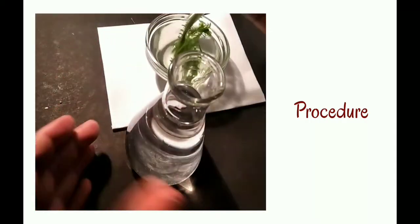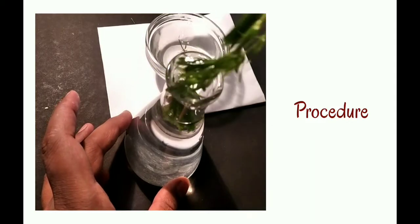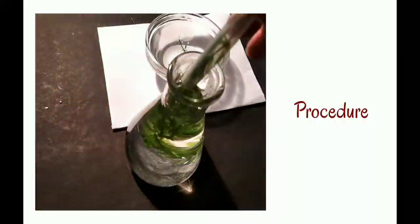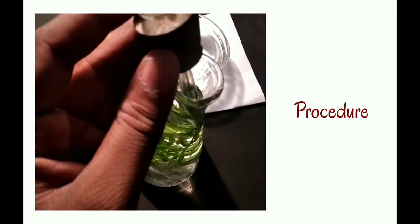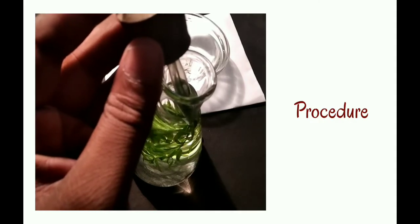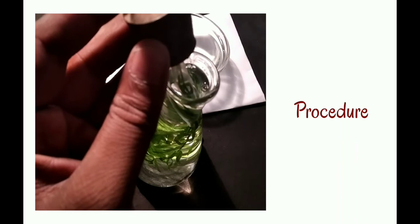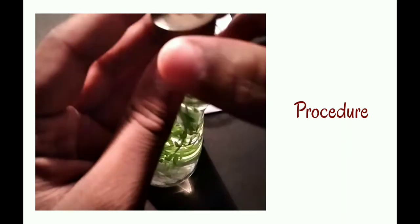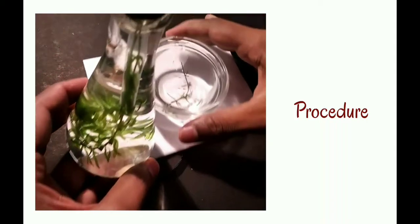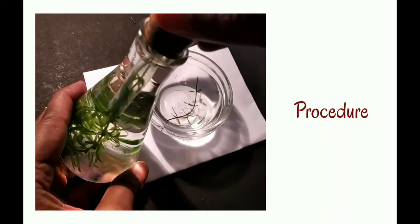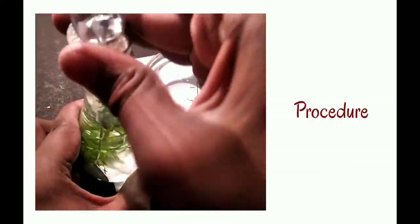Take the conical flask with water and 1% sodium bicarbonate solution which serves as the carbon source for photosynthesis. Add still more water and avoid the formation of air bubbles inside the conical flask, and add water to the water reservoir tube also.